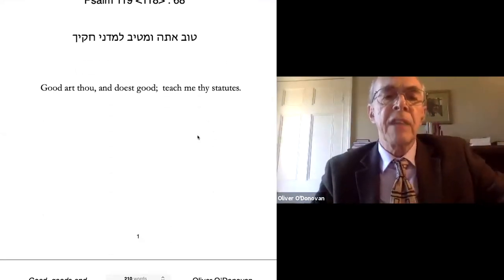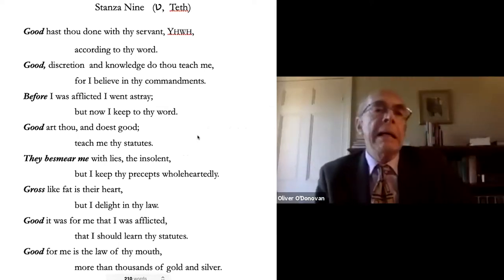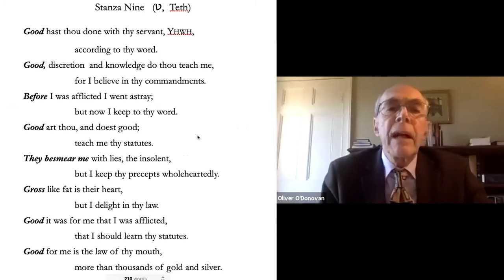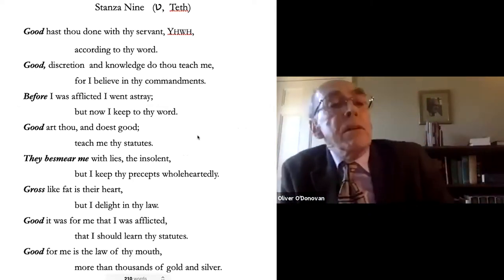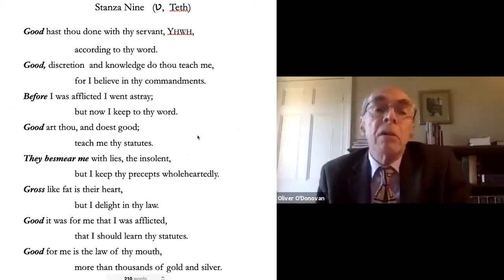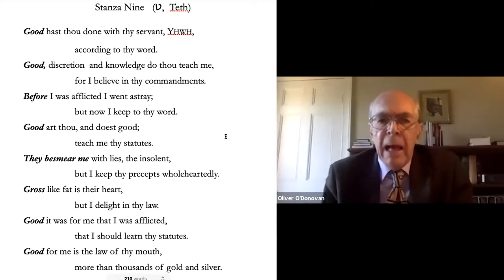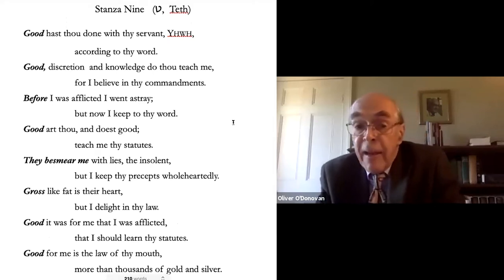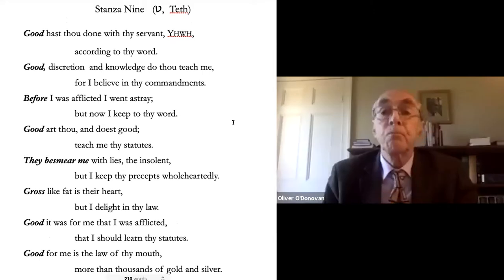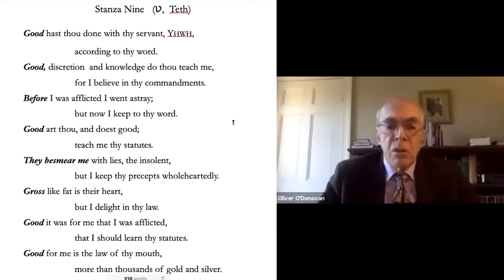Let's take a look at the ninth stanza organized in that way: 'Good hast thou done with thy servant, Adonai, according to thy word. Good discretion and knowledge do thou teach me, for I believe in thy commandments. Before I was afflicted I went astray, but now I keep to thy word. Good art thou, and doest good — teach me thy statutes. They besmear me with lies, the insolent, but I keep thy precepts wholeheartedly. Gross like fat is their heart, but I delight in thy law. Good it was for me that I was afflicted, that I should learn thy statutes. Good for me is the law of thy mouth, more than thousands of gold and silver.'